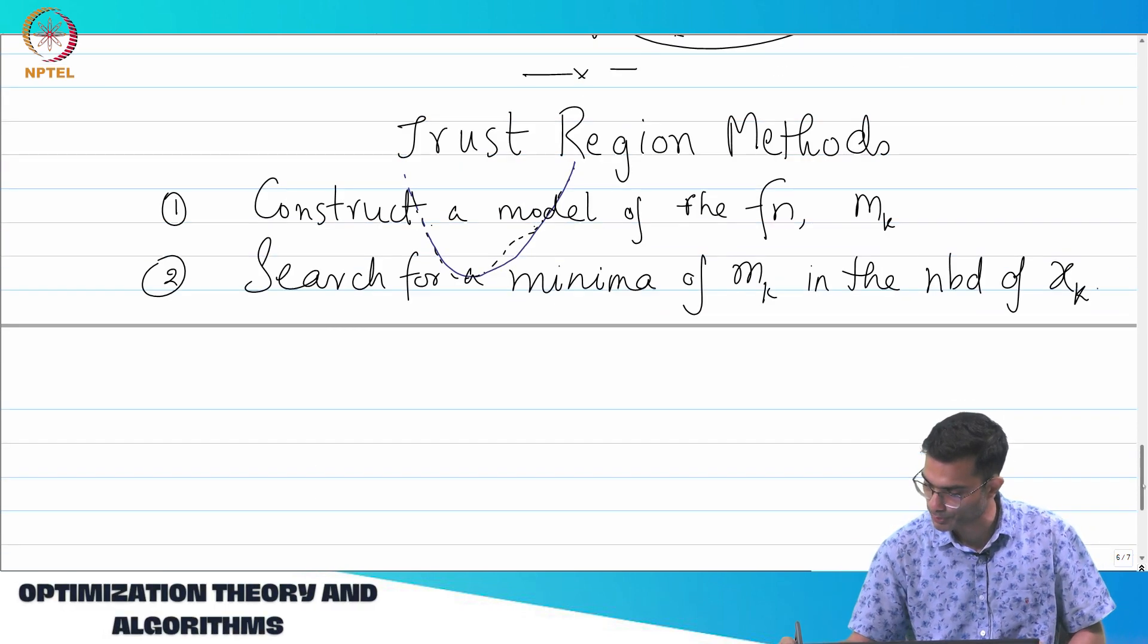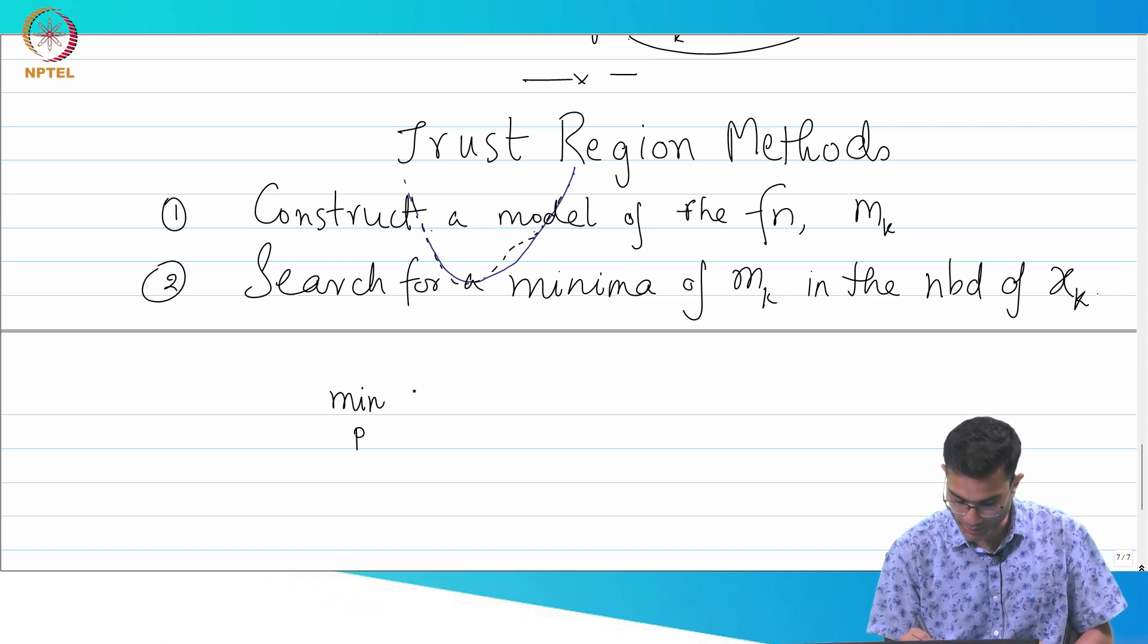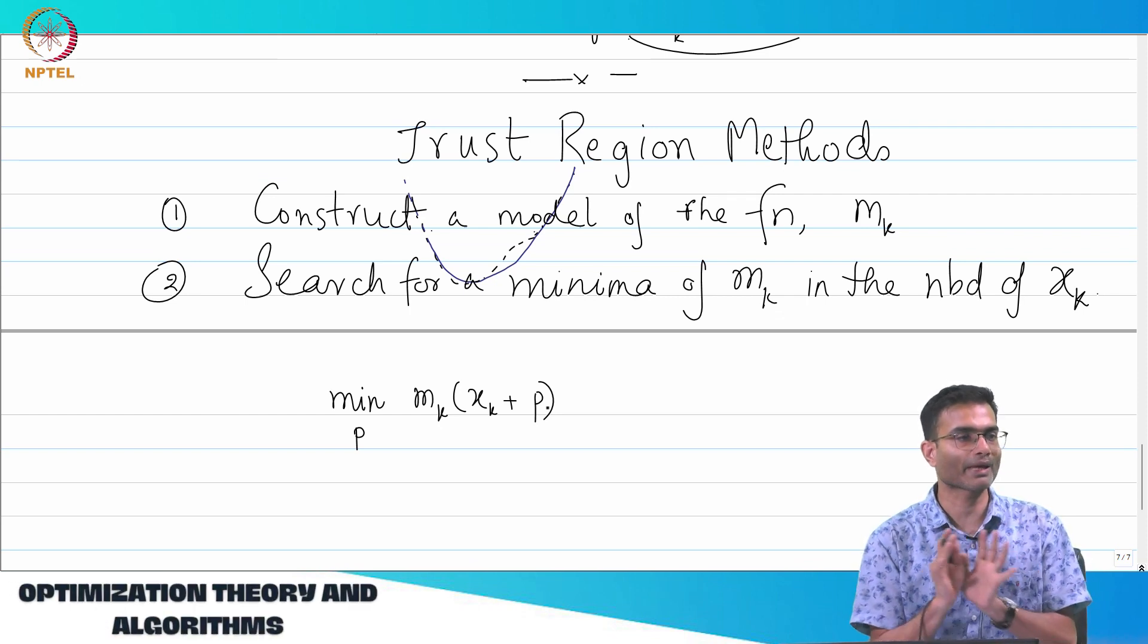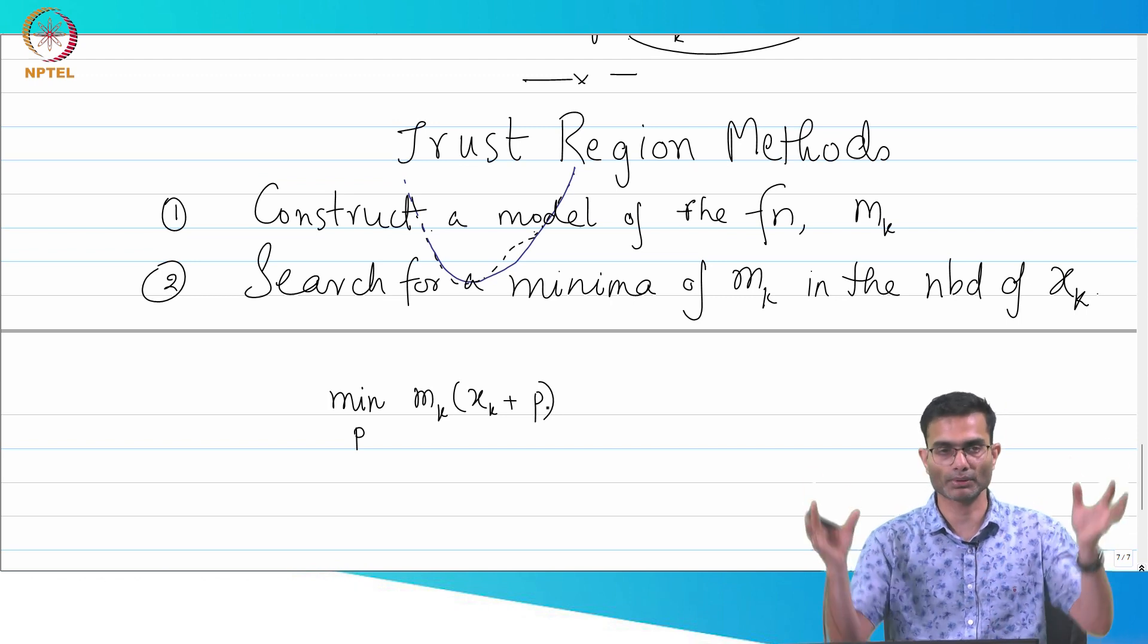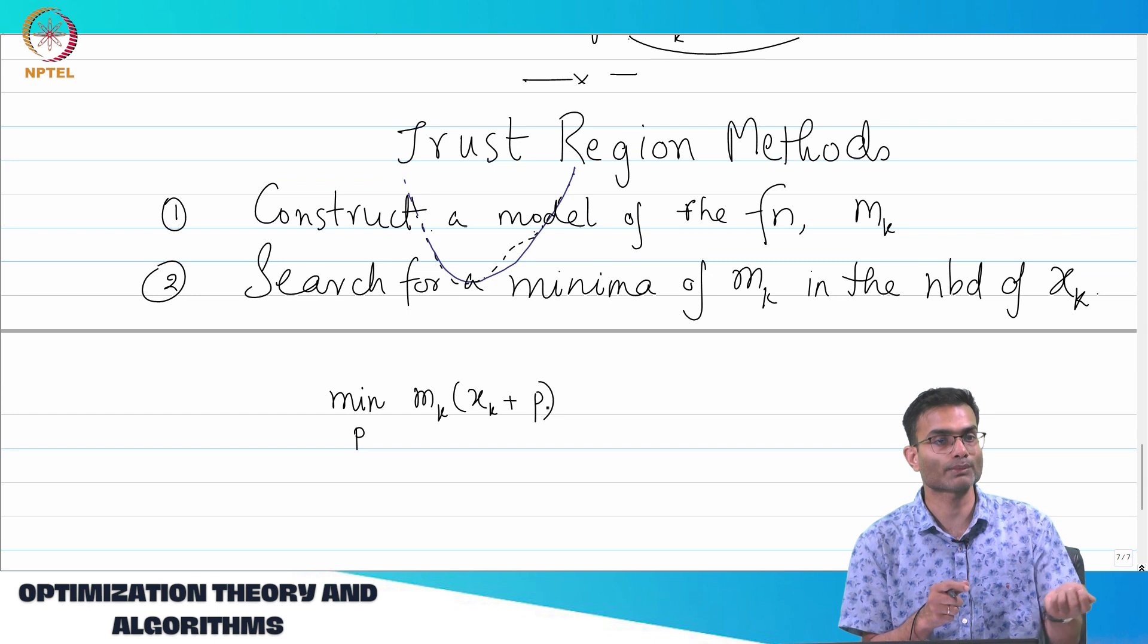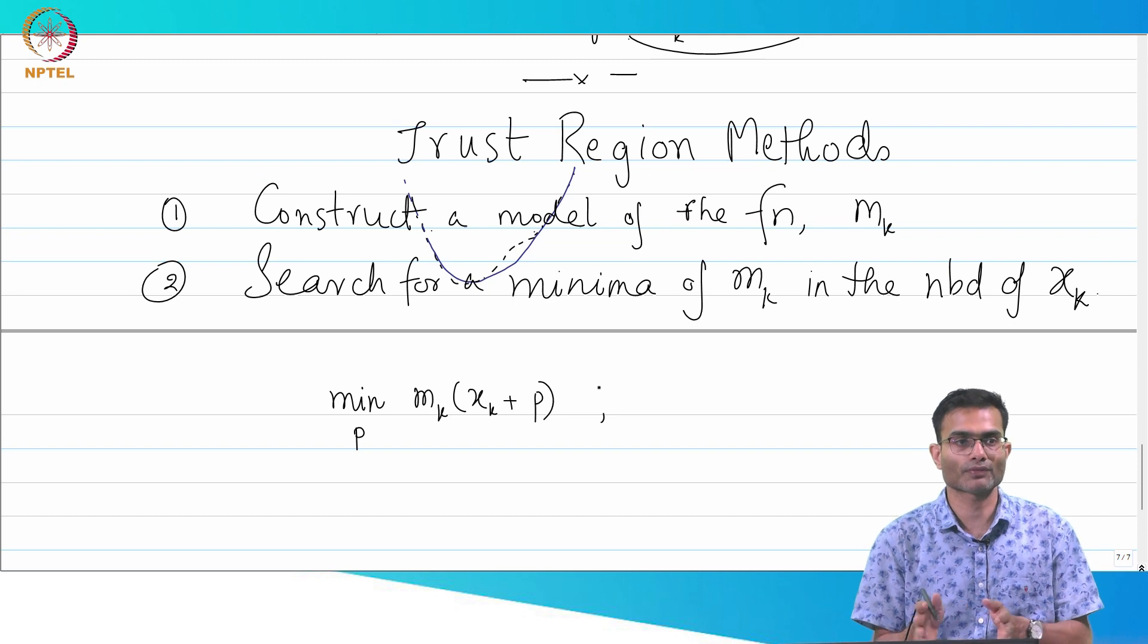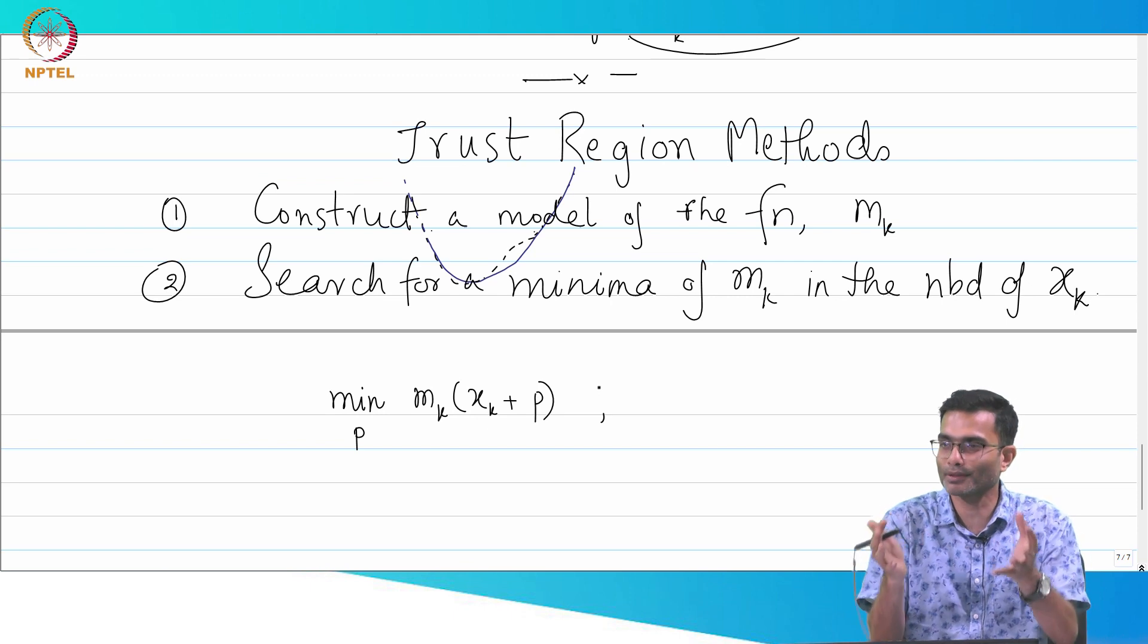So what does the optimization problem look like? Now I am trying to search for, give me the best p such that mk(xk + p). So I have my model mk which explains the function behavior near xk. For example, a parabola or whatever. And I say now let me add a little bit of p to this and give me the best p. So in some sense I am looking for the direction. It could be any p, but if I do not put any constraints on this I will be in trouble because this model is accurate only near xk.